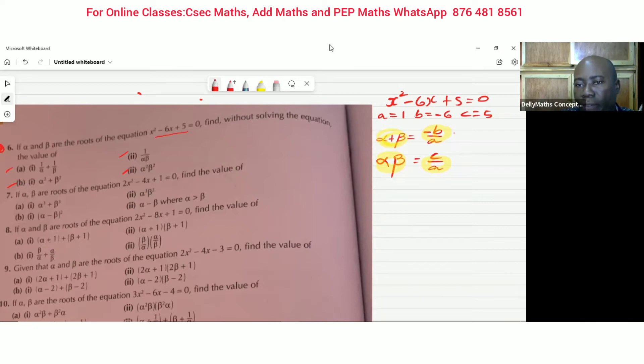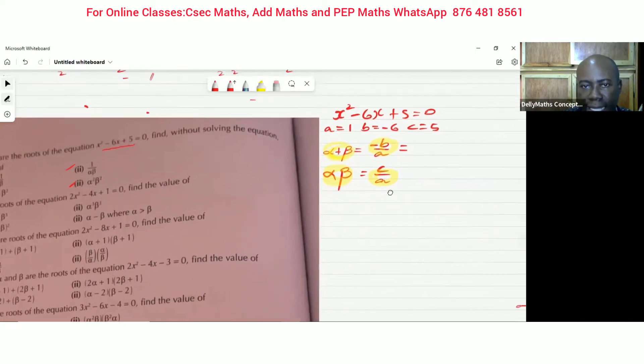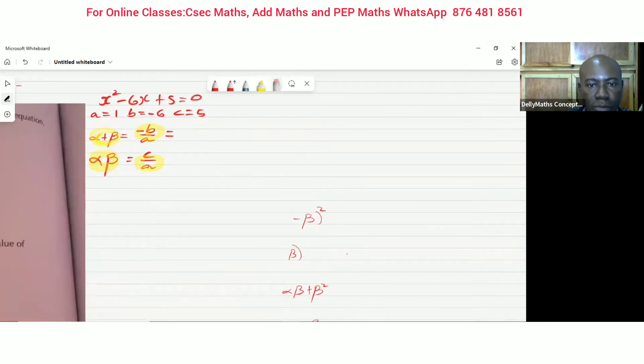Now, let us go about finding the values for the sums and the products right now. So we have minus six, it's minus minus six over A which is one, which is just going to give us six. And this one is five over one, and that's going to give us five. So the sum of the roots will give us six and the product will give us five.